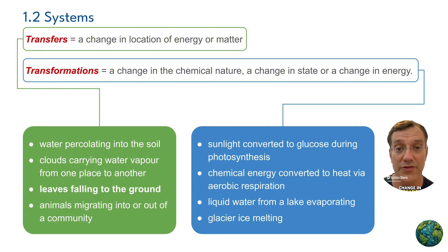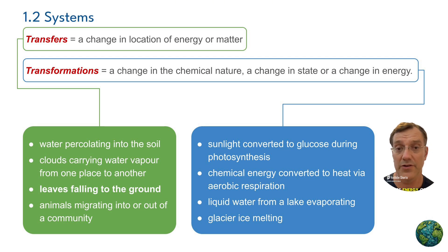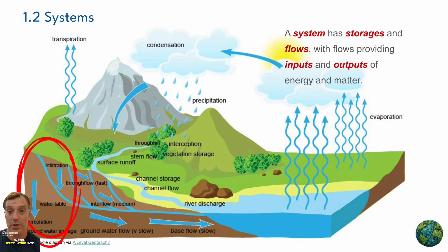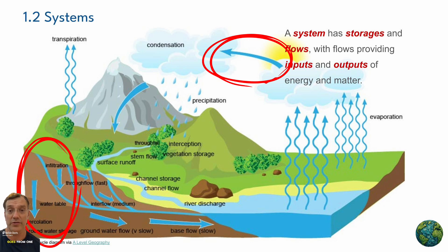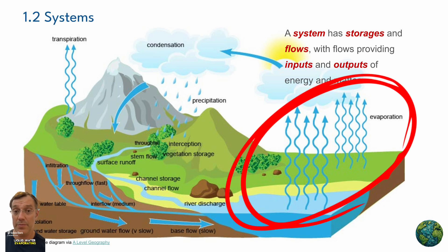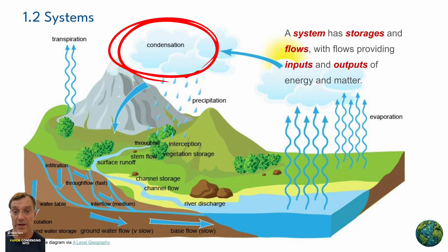Flows in a system can be characterized as either transfers or transformations. Transfers involve a change in location of energy or matter, while transformations entail a change in the chemical nature, the state of energy, or its form. For instance, in the water cycle, water percolating into the soil or clouds carrying water vapor are transfers — matter just moves from one place to another. On the other hand, liquid water evaporating from a lake is a transformation, as is water vapor condensing into a cloud.